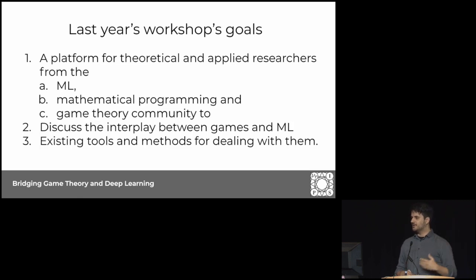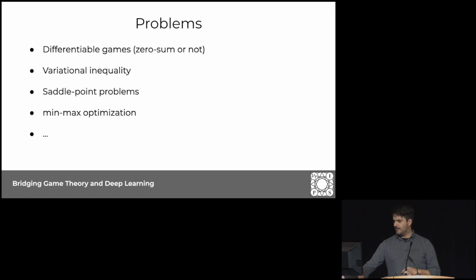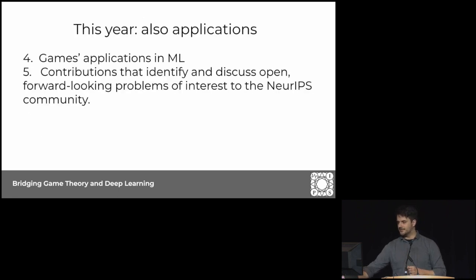Also rediscovering and really getting a better understanding of all that old literature that we had been ignoring that we need to be aware of. This is just a summary of problems and formulations that we find relevant: differential games, variational inequalities, fixed-point problems, min-max optimization. Similar problems come with different names and then slight variations in different communities, so it's hard sometimes to identify all the relevant literature.